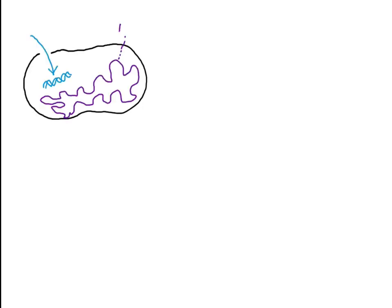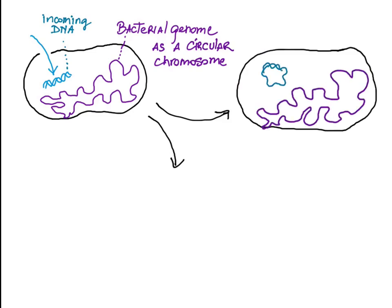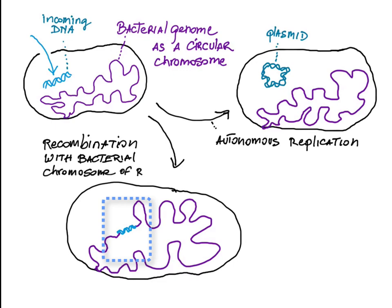Fate of transferred DNA. There are two possible ways for foreign DNA to become established in a recipient bacterial cell: it either replicates autonomously in the form of a plasmid, or it recombines with the DNA of the recipient.